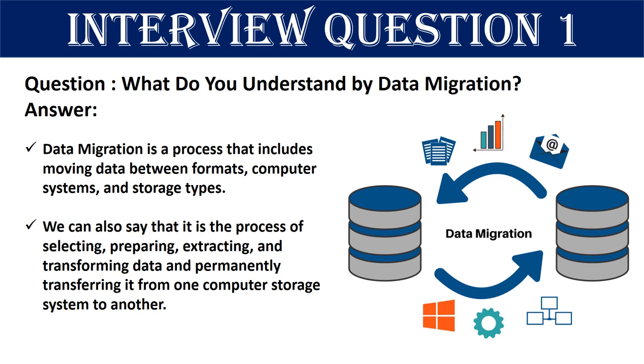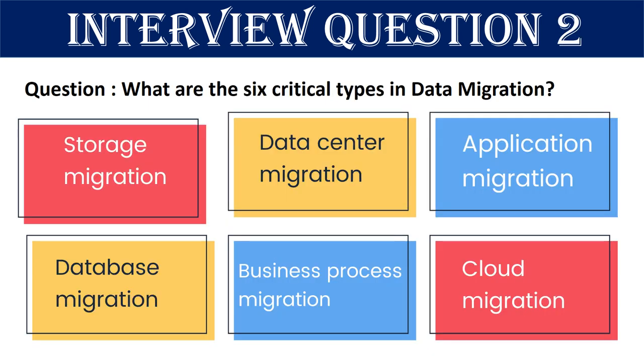We can also say that data migration is the process of selecting, preparing, extracting, and transforming data, and permanently transferring it from one computer storage system to another. Question 2: What are the six critical data migration types?